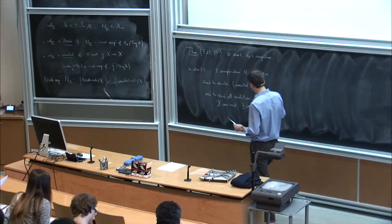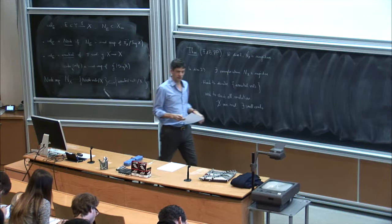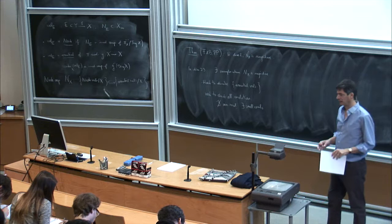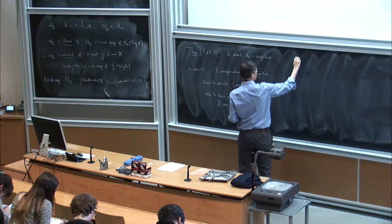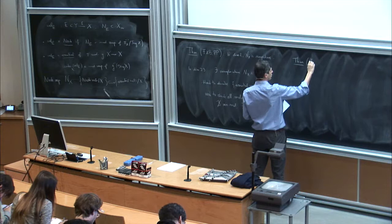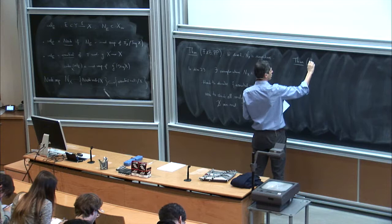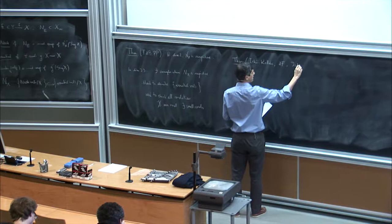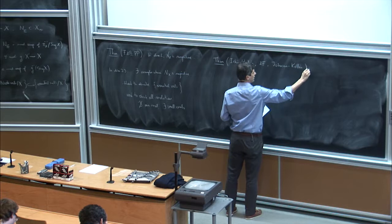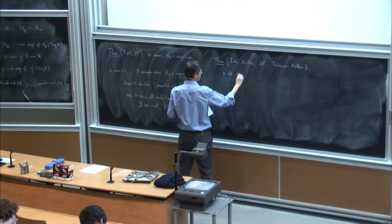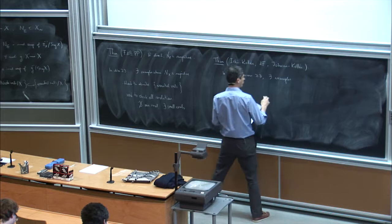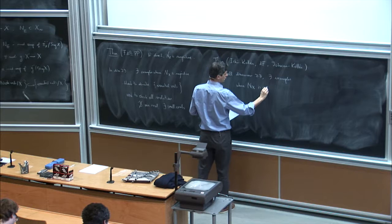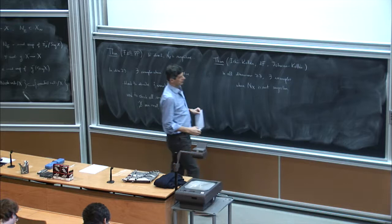The notion of essential divisors in dimension three and higher is quite subtle, and maybe it's saying that's not the right thing to look at. There is a collection of three theorems — one by Ishii and Kollár, one by myself, and one by Johnson — showing that in all dimensions greater than or equal to three, there are examples where the Nash map is not surjective. I will describe an example.